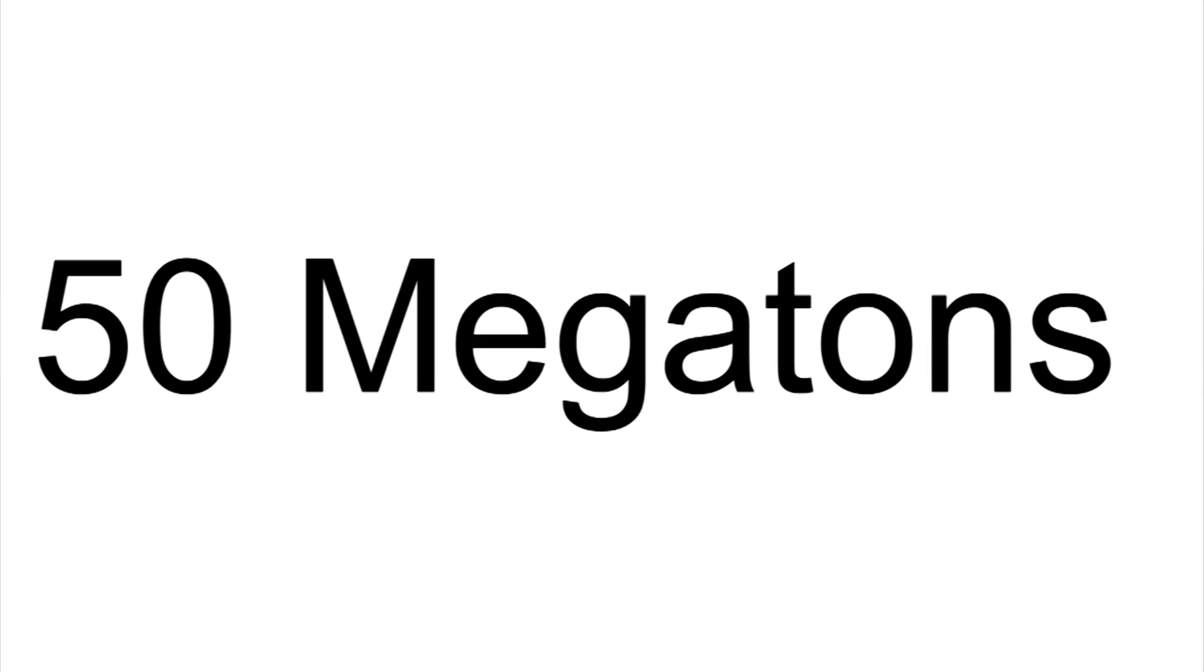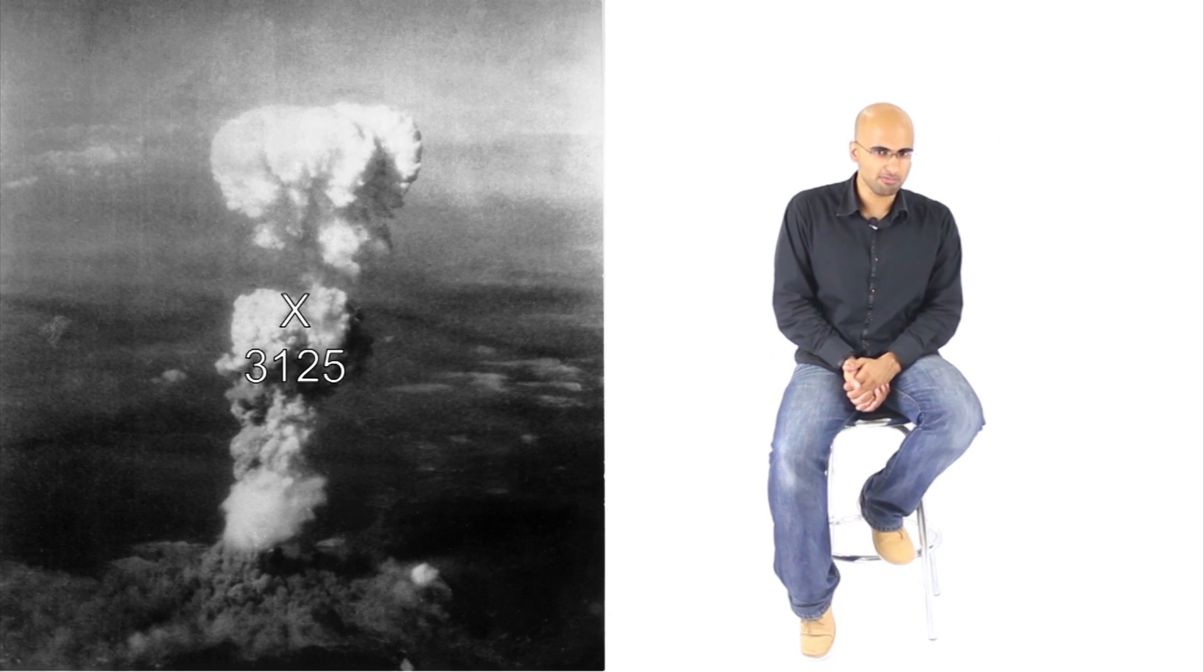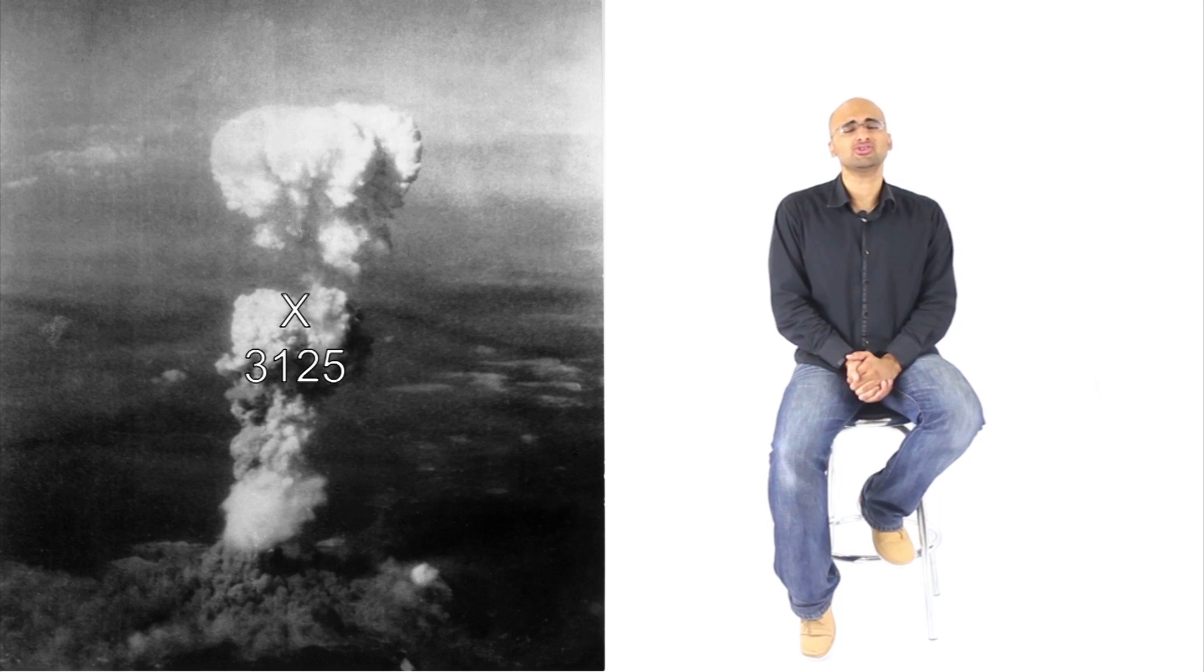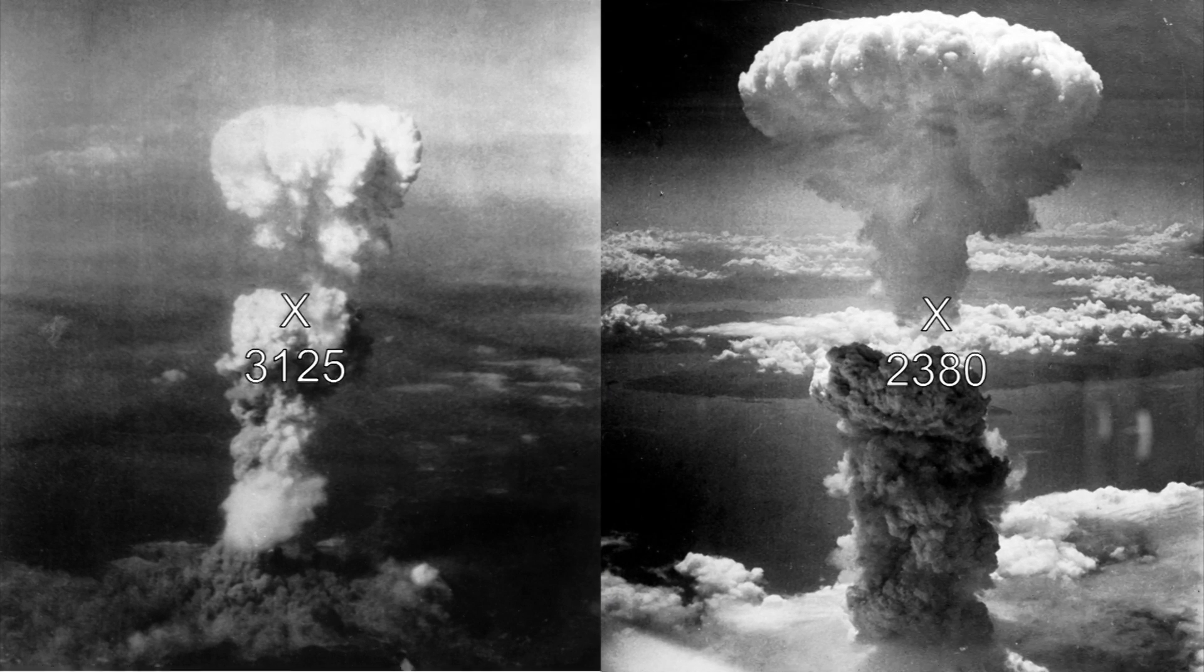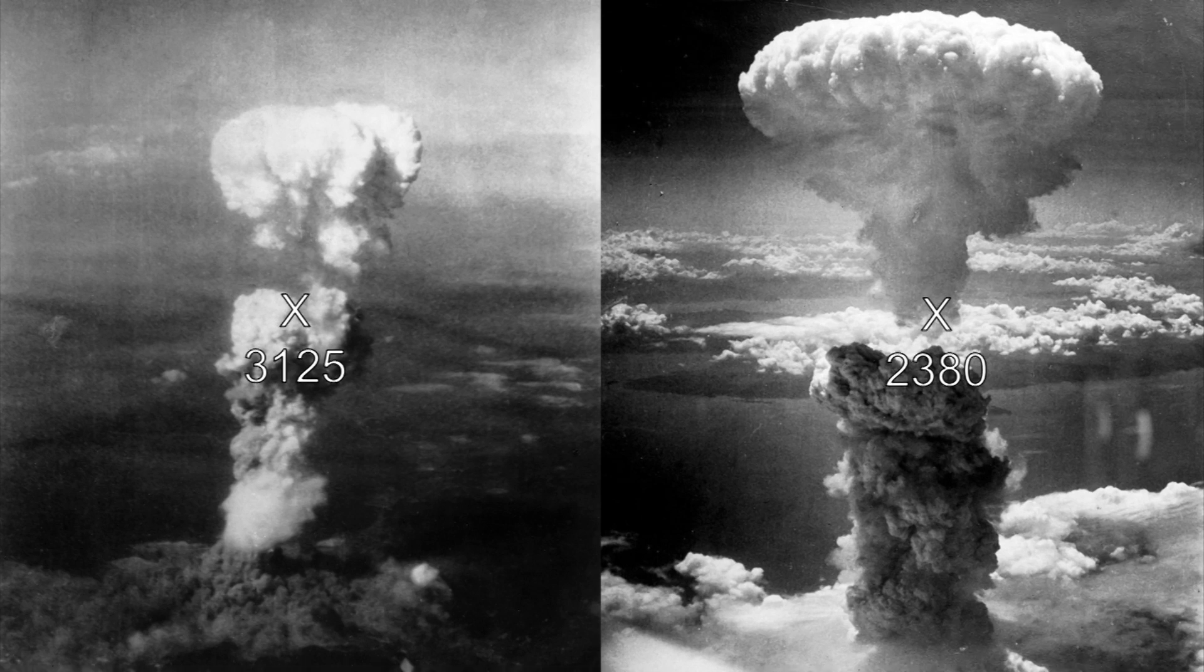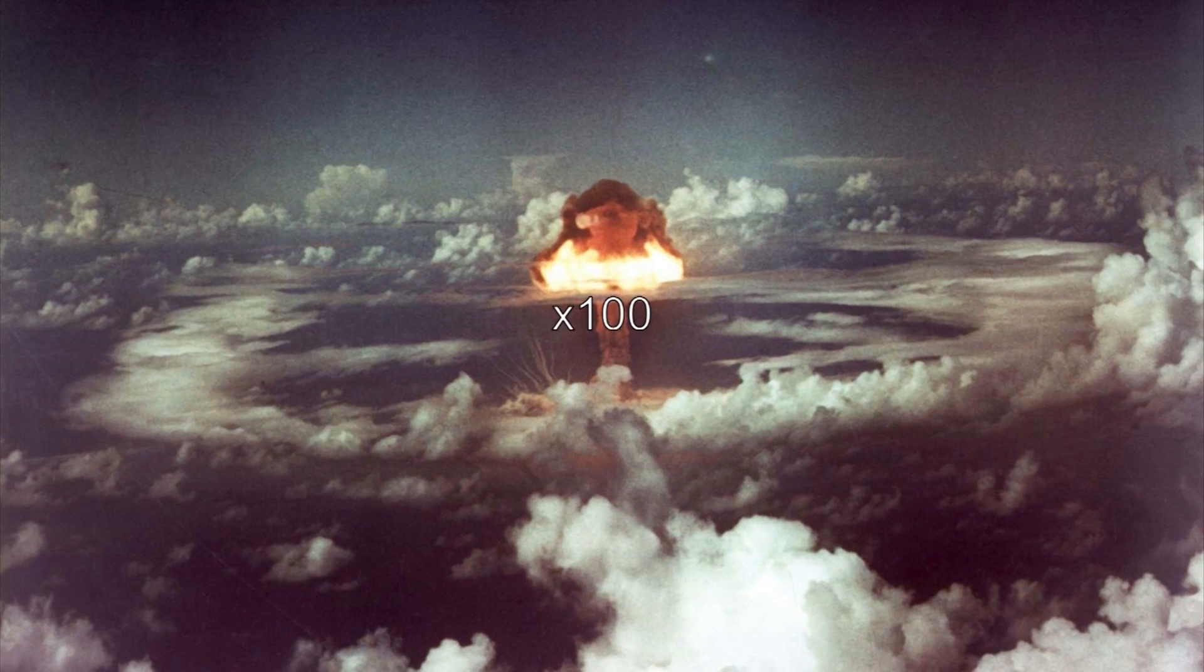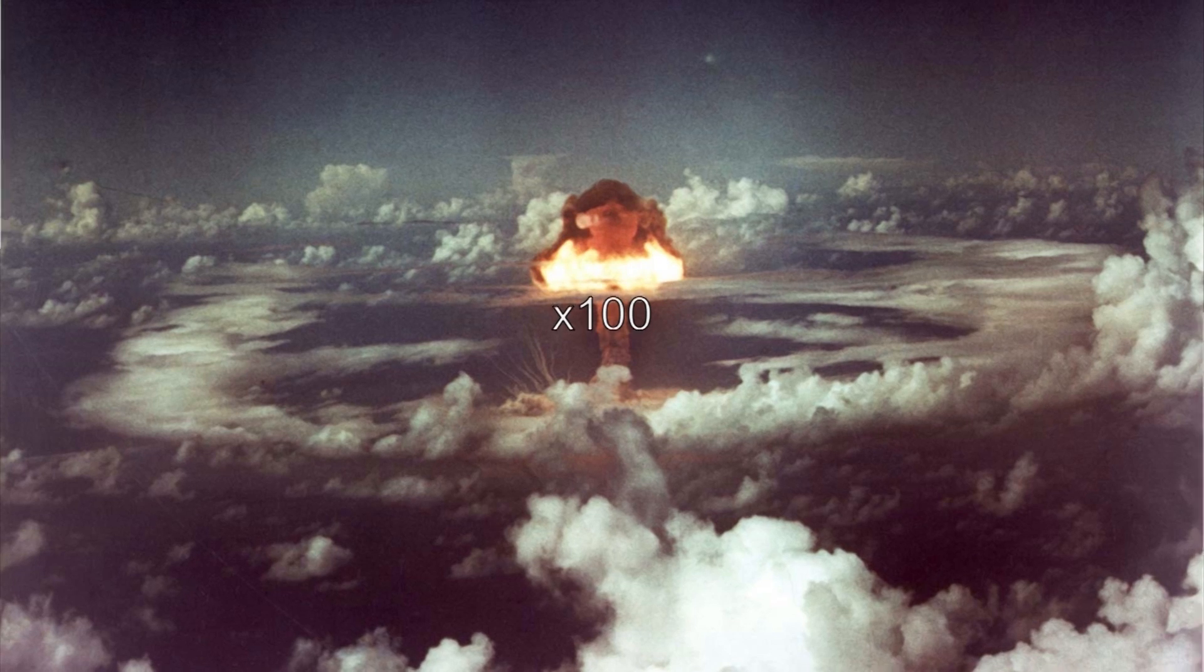The most powerful hydrogen bomb, fusion bomb, ever detonated was called the Tsar Bomba. The Tsar Bomba exploded with an explosive yield of 50 megatons. That's 50,000 kilotons worth of TNT behind this thing. That's 3,125 times more powerful than Little Boy, the bomb that was dropped on Hiroshima. And 2,380 times more powerful than Fat Man, the bomb that was dropped on Nagasaki. That's 100 times more powerful than the most powerful fission bomb tested by the United States, Ivy King.